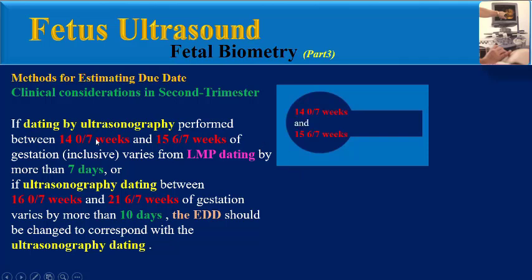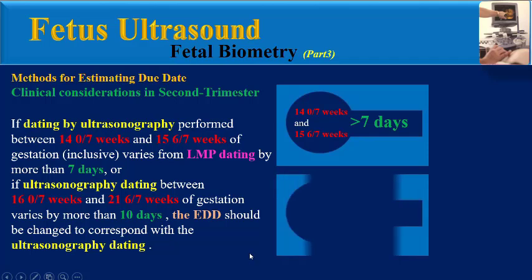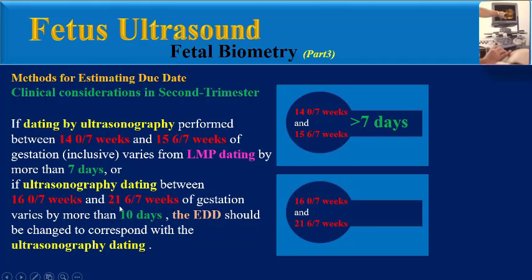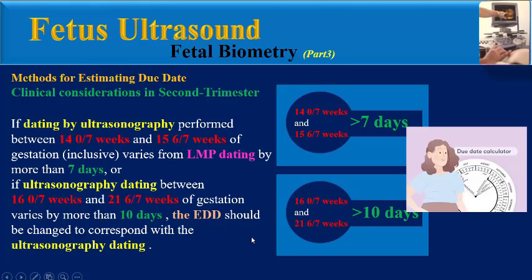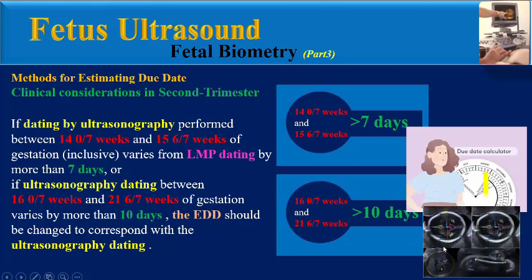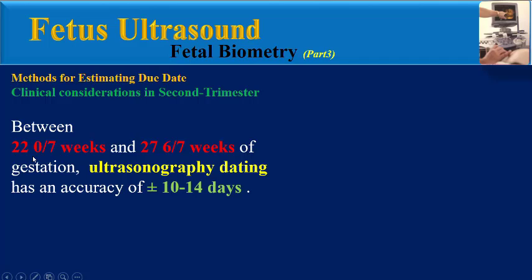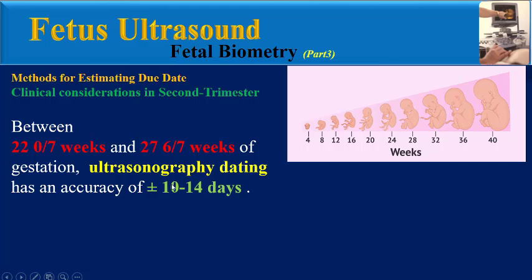If dating by ultrasonography performed between the beginning of 14 weeks and the end of 15 weeks of gestation varies from LMP dating by more than 7 days, or if ultrasound dating between the beginning of 16 weeks and the end of 21 weeks of gestation varies by more than 10 days, the estimated due date should be changed to correspond with the ultrasonographic dating.